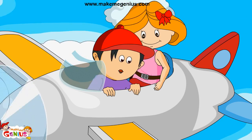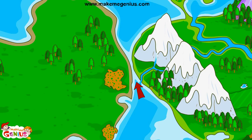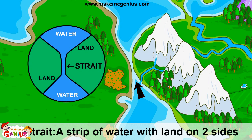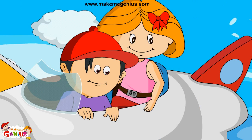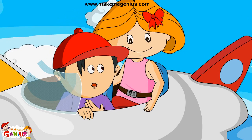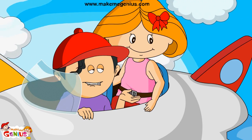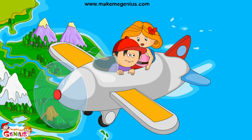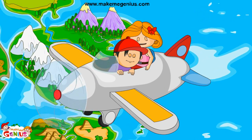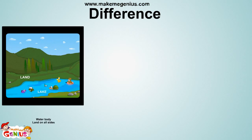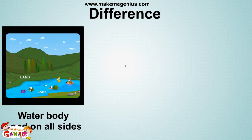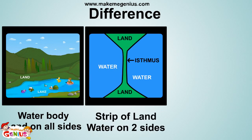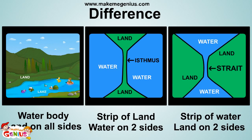It is a water body having land on both sides. It is called a strait. An isthmus is a strip of land with water on two sides, and a strait is a strip of water with land on two sides. It is just the opposite of an isthmus.